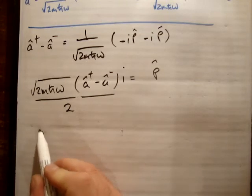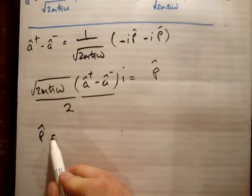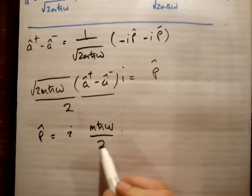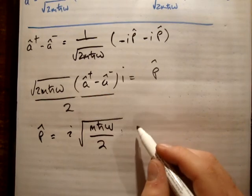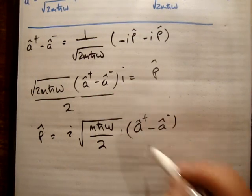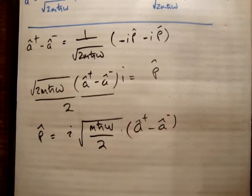As a result, I can write that P, the momentum operator, is equal to iota outside of the square root of MℏΩ over 2, times A plus minus A minus. That's the position and momentum operators written in terms of the ladder operators. Thanks for watching, please pass down to your friends, and subscribe to my channel.